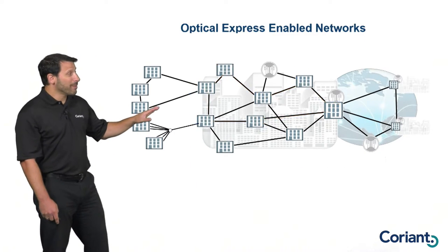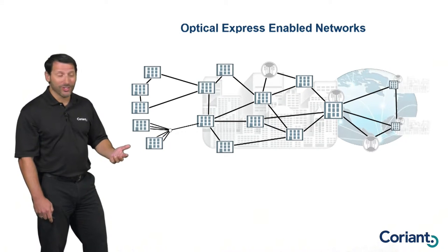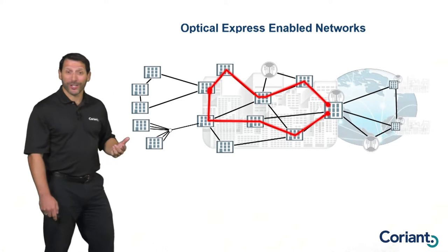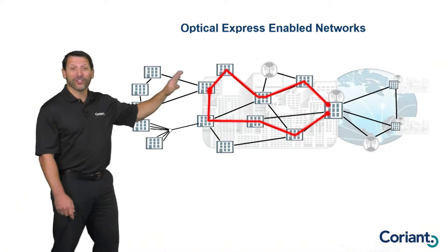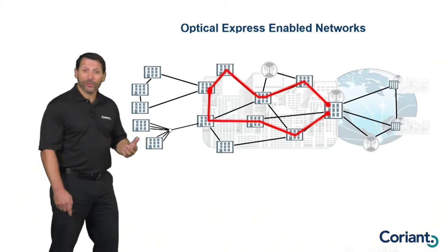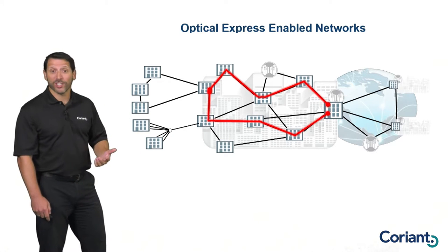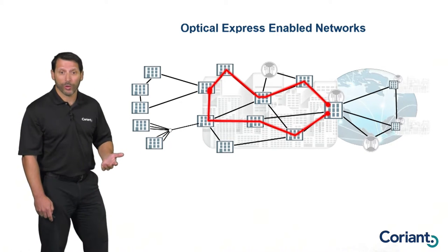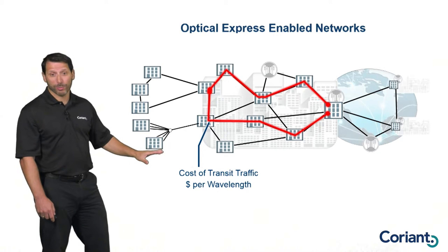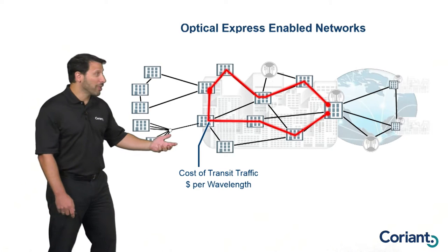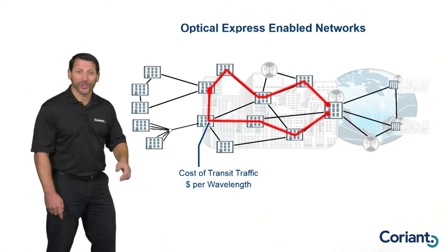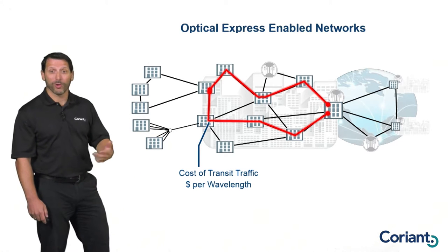If we look at the same network with Optical Express capabilities, I only need to go to the endpoints to turn that service up — I'm only going to install things at the endpoints. In all of the intermediate locations, that traffic just optically expresses. There's no additional equipment required. The savings that Optical Express provides are also amplified by the number of locations in the network, so as the network grows, you're going to save more and more money.